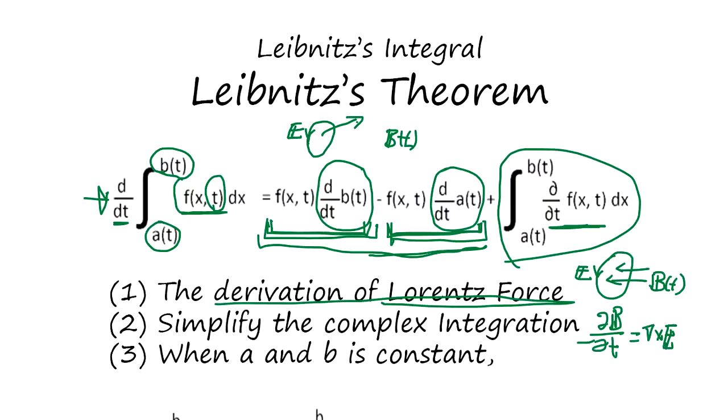So, electric field is generated by either magnetic field change over time or boundary move within a magnetic field. So, this is the complete equation for magnetic field and electric field interaction.